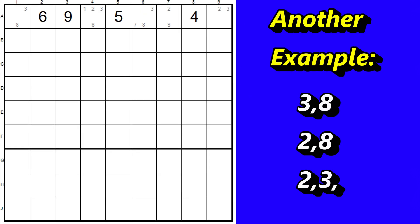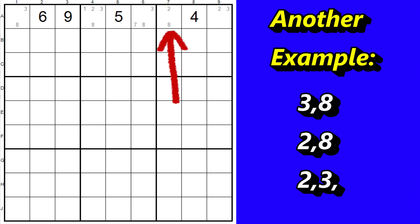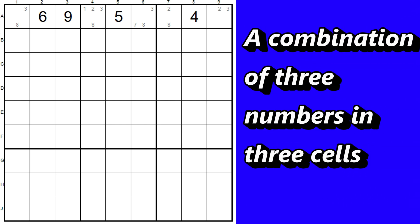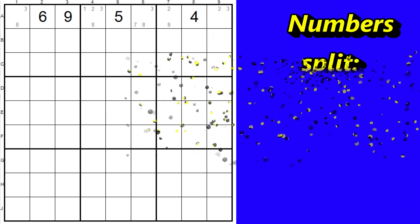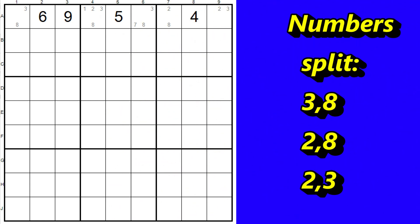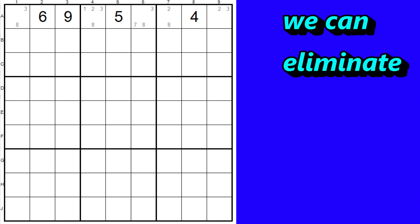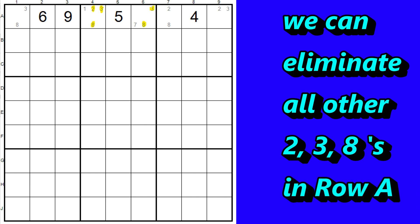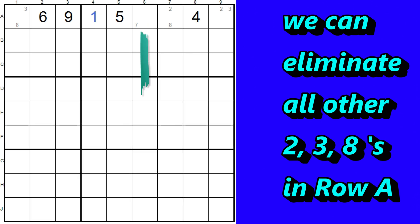Here's an example of another triplet — again the two, three, and eight — but here it's the three, eight in this cell, and the two, eight in this cell, and then the two, three in this one. It's still a combination of three numbers in only three cells, but instead of ABC, ABC, ABC, it's an AB, AC, BC arrangement — three numbers split two, two, and two into the three cells. Once we identify this triplet, we can eliminate all the other twos, threes, and eights in the row, and now this cell becomes a one, and this is a seven.